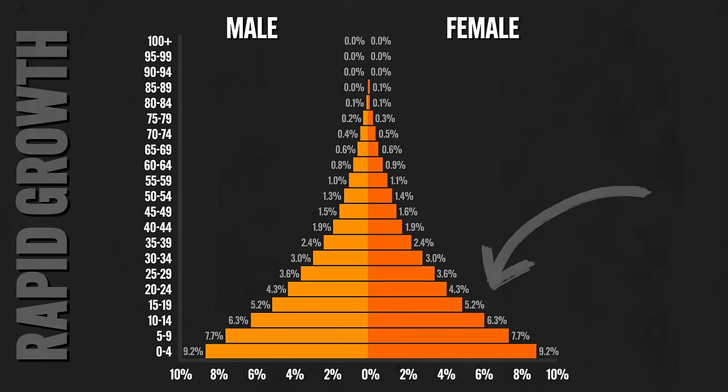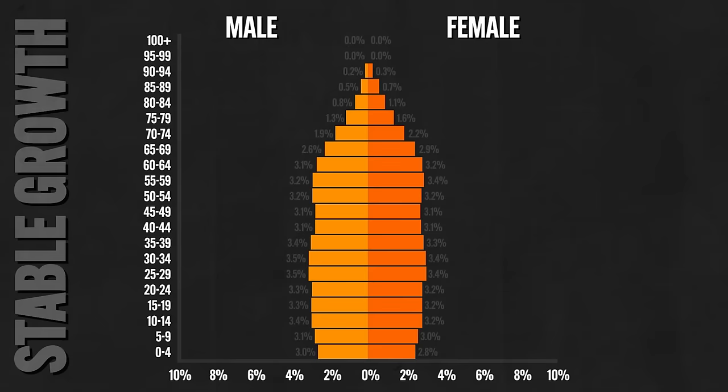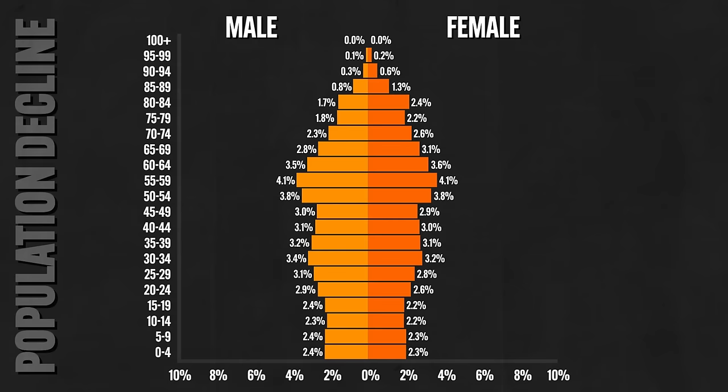A wide-base pyramid shape illustrates a population in rapid growth — there are way more young people than older people. This often occurs in developing countries with high birth rates and shorter lifespans, like the Democratic Republic of the Congo. A slightly narrower base indicates slow growth — still a pyramid but birth rate is only slightly higher than death rate, as in China due to their one-child policy. A roughly even distribution throughout age ranges indicates stable growth, like the United States. And a shape where the base is narrower than the top indicates population decline, as in Germany, which faces challenges like labor shortages and decreasing demand for consumer products.